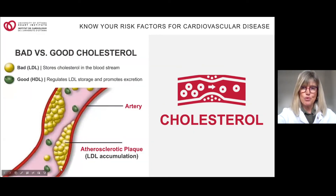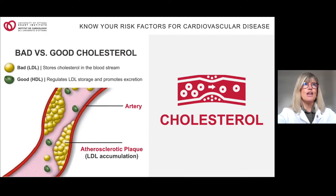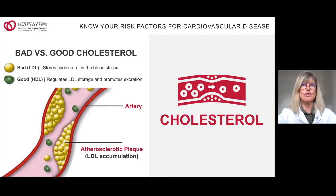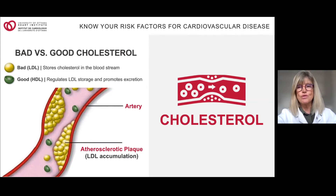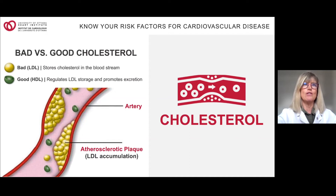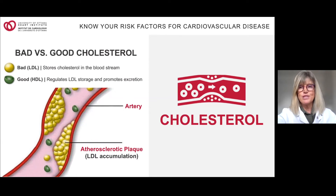When you have a blood test called a lipid profile, you're looking at three kinds of fats — I call them the good, the bad, and the ugly. HDL is the good cholesterol — you want it as high as possible; it regulates LDL storage and promotes excretion. LDL is the lousy cholesterol — it stores cholesterol in your body and is the target of statins. Triglycerides are unburned fuel carbohydrates that get converted and stored as fat in the body.